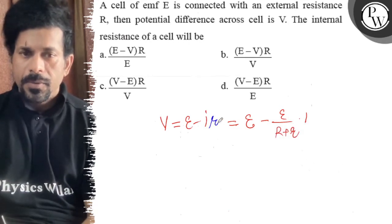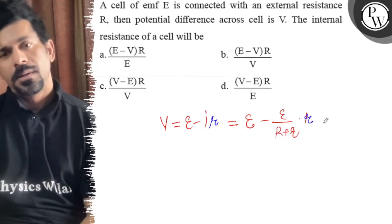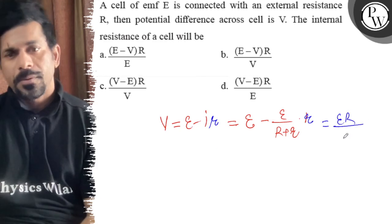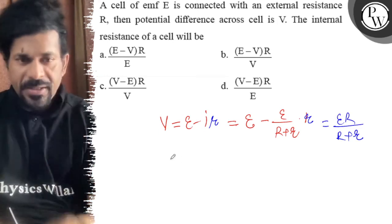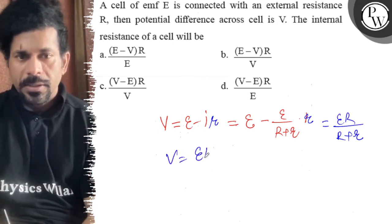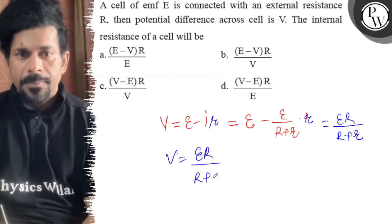So E small r into small r, so E capital R upon R plus small r. So V is equal to E capital R upon R plus small r.